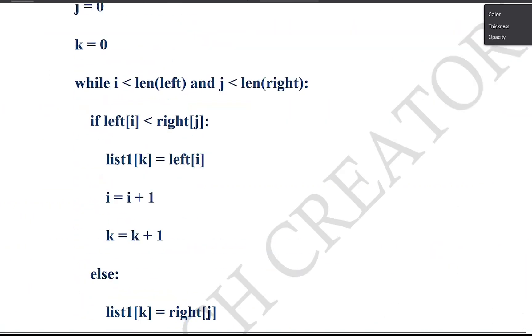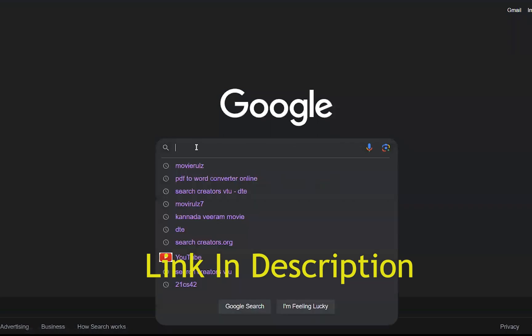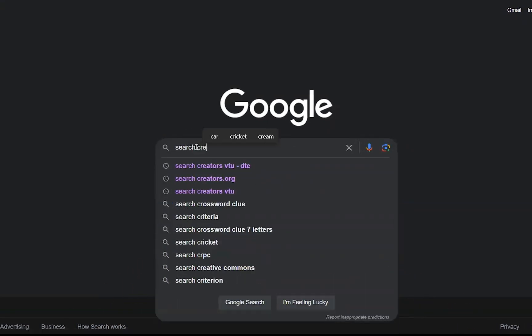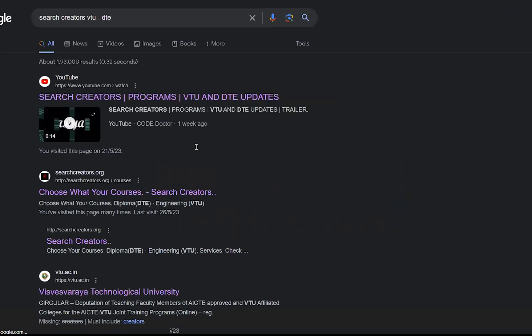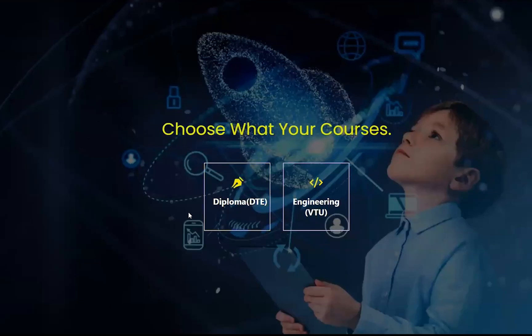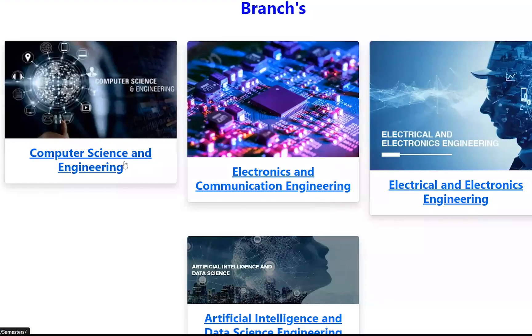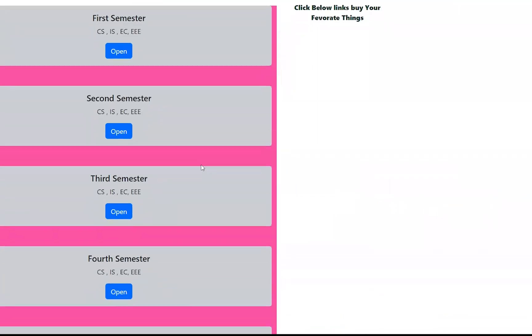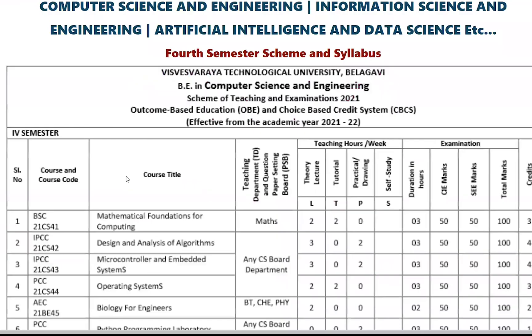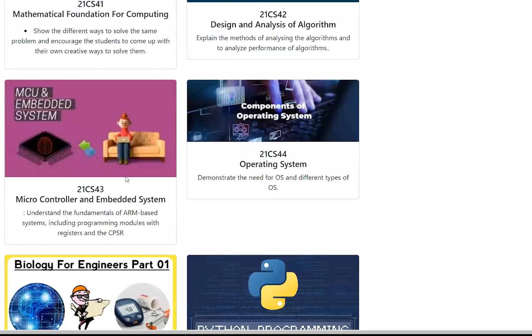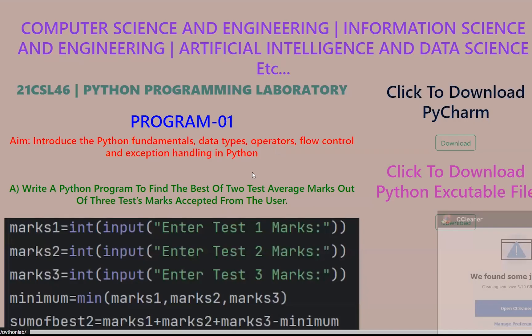So first visit our website through the link or Google. Search Create VTU DTE, enter. Next through second link or first link click, then click on Engineering or VTU. Next click on Computer Science and Engineering. Next scroll down to select semester and click on open.